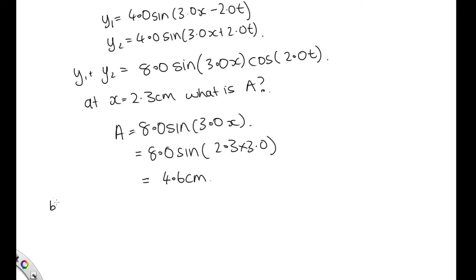Part B asks: if one end of the string is at x equals 0, where are the nodes and anti-nodes? Nodes occur at 0, lambda over 2, lambda, 3 lambda over 2, et cetera. To find their positions, we need to work out the wavelength.